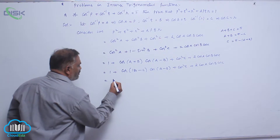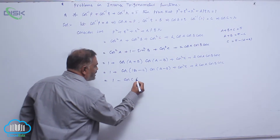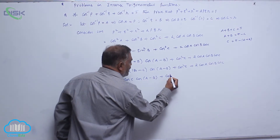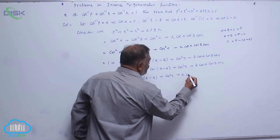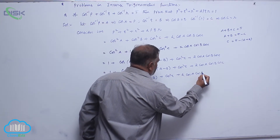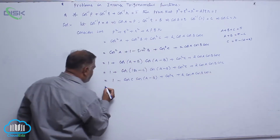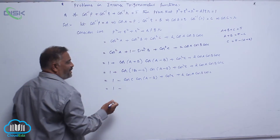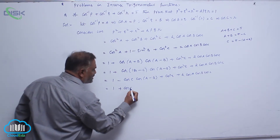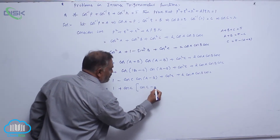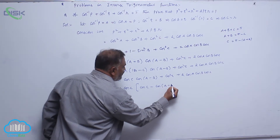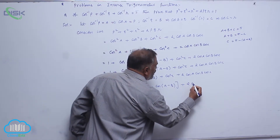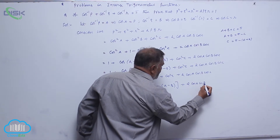This becomes 1 minus cos C times cos of (A minus B) plus cos squared C plus 2 cos A cos B cos C. Now, cos C can be taken as a common factor: 1 plus cos C into [cos C minus cos of (A minus B)] plus 2 cos A cos B cos C.